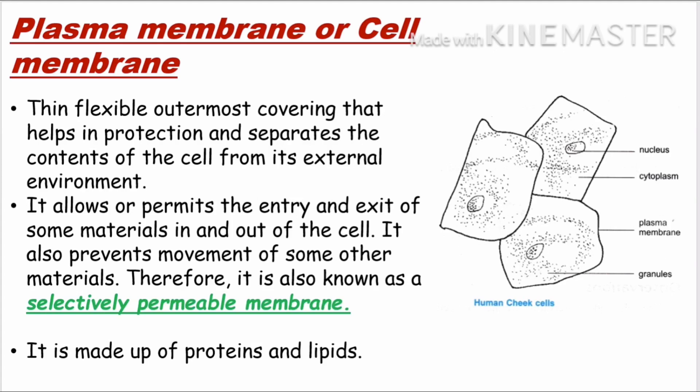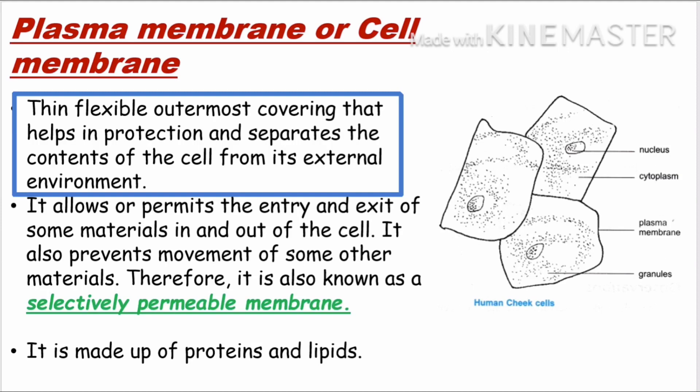Let's start with plasma membrane. It is a thin, flexible, outermost covering that helps in protection and separates the contents of the cell from its external environment. Yeh cell ki charo taraf ki covering hai jo protection mein kaam aati hai aur cell ke andar aur bahar ki cheezein mix nahi hone deti.